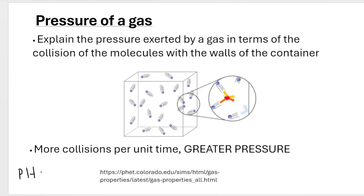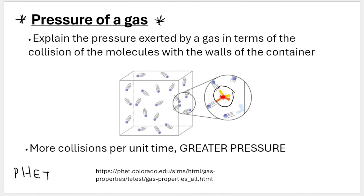That simulation is called a PhET simulation — you can find it on Google and play around with it yourself. According to your exam guidelines, you need to be able to explain the pressure exerted by a gas in terms of the collisions of the molecules with the walls of the container. This image illustrates that the particles are colliding with each other and with the walls of the container; the more collisions per unit time, the greater the pressure.